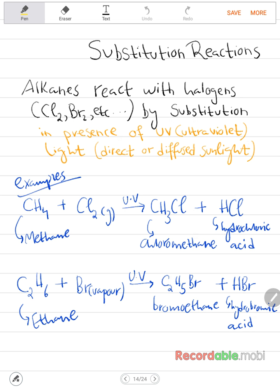So now to the substitution reactions. Alkanes react with halogens, as I said in the previous video, halogens are group number 7 elements like chlorine and bromine and so on, by substitution, but under a certain condition: in the presence of ultraviolet light. It can be direct or diffused sunlight, it doesn't matter, but as long as UV light is present, the alkane can react with the halogen.